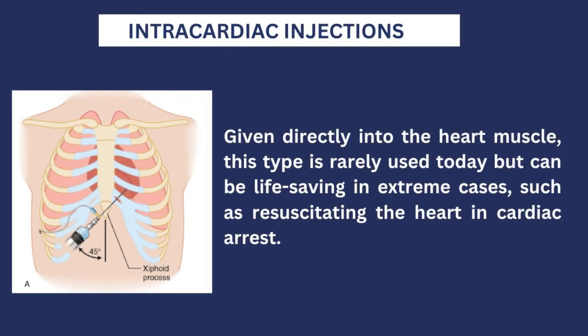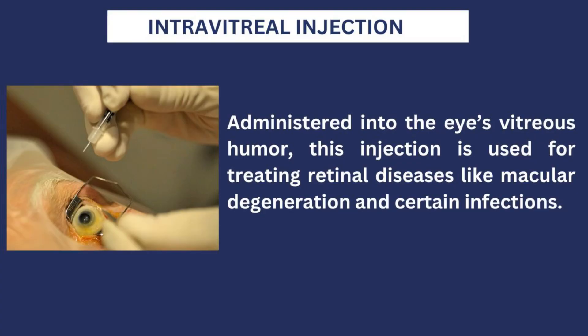Another type of injection is the intracardiac injection. This is very, very rare — it is given directly into the heart muscles and can only be used in very severe situations. You don't commonly see this in the hospital, and you have to be specially trained since it takes a specialist to administer this type of injection. Next is the intravitreal injection, which is administered into the eye's vitreous humor. This injection is used for treating retinal diseases like macular degeneration and certain infections.